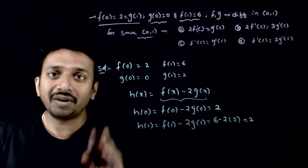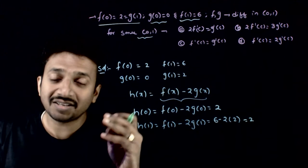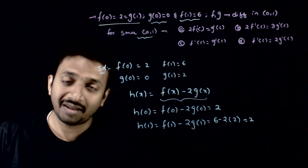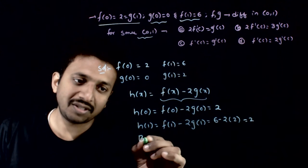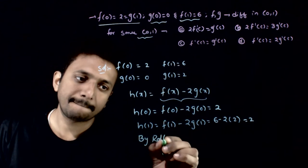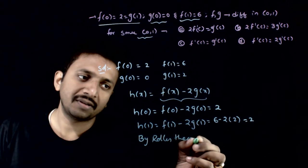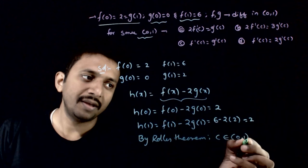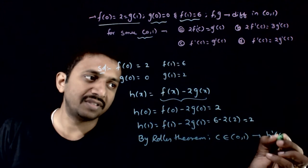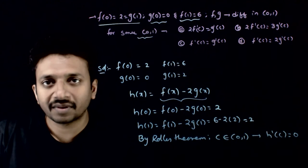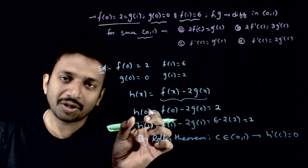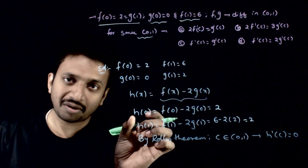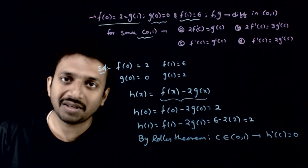Now h(0) = h(1), and h is a continuous and differentiable function. Hence, by Rolle's theorem, there should exist a c which belongs to (0, 1) where h'(c) = 0. Between 0 to 1, there should exist at least one value where h'(c) = 0.